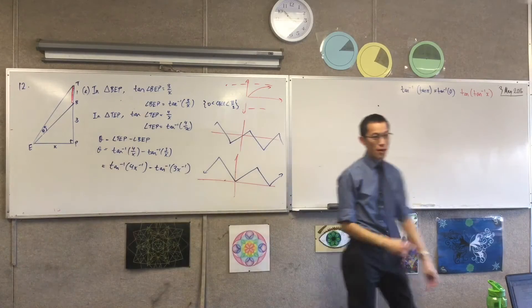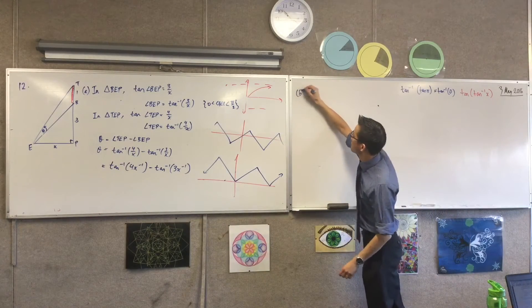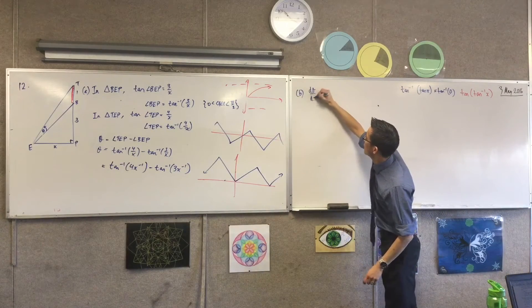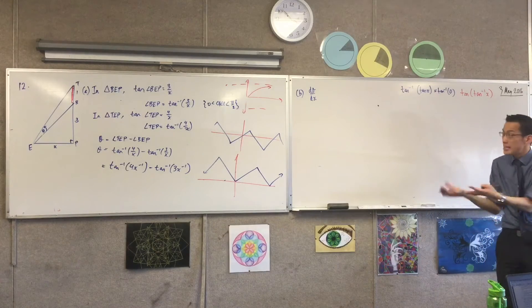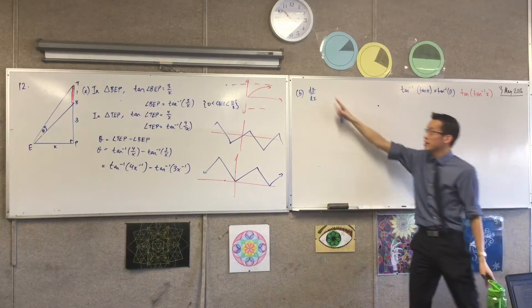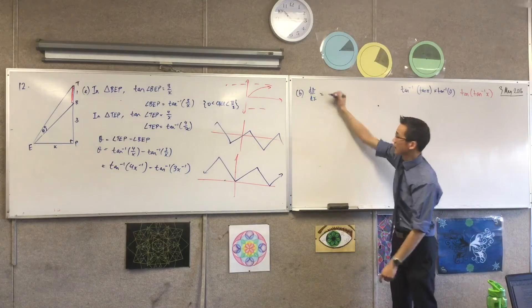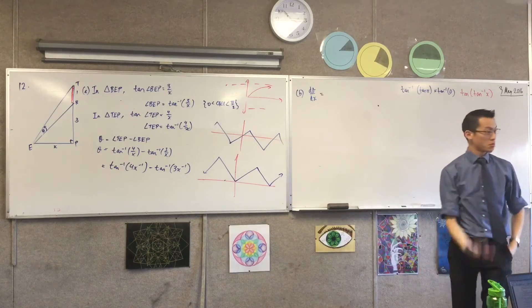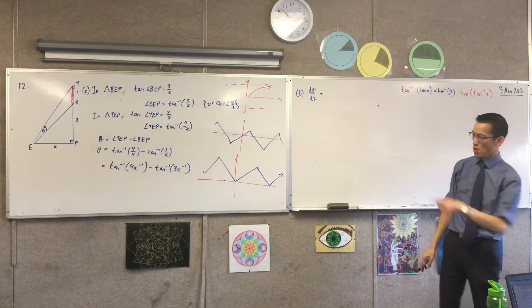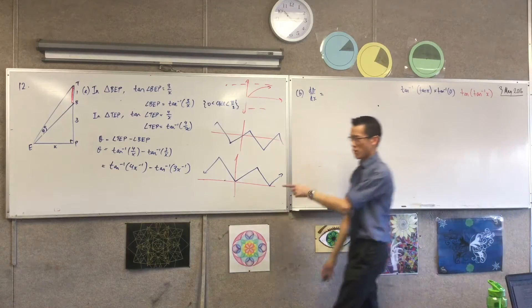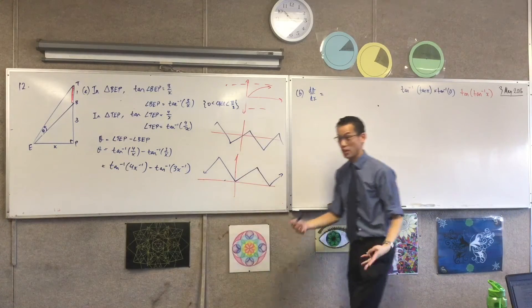Now I'm ready to launch into my derivative. So this is part B — dθ/dx. I want to see how theta is changing as x changes; that's what this derivative means. We'll do the inside, then we'll do the outside. What is the derivative of the inside here? Can someone just state it for me?